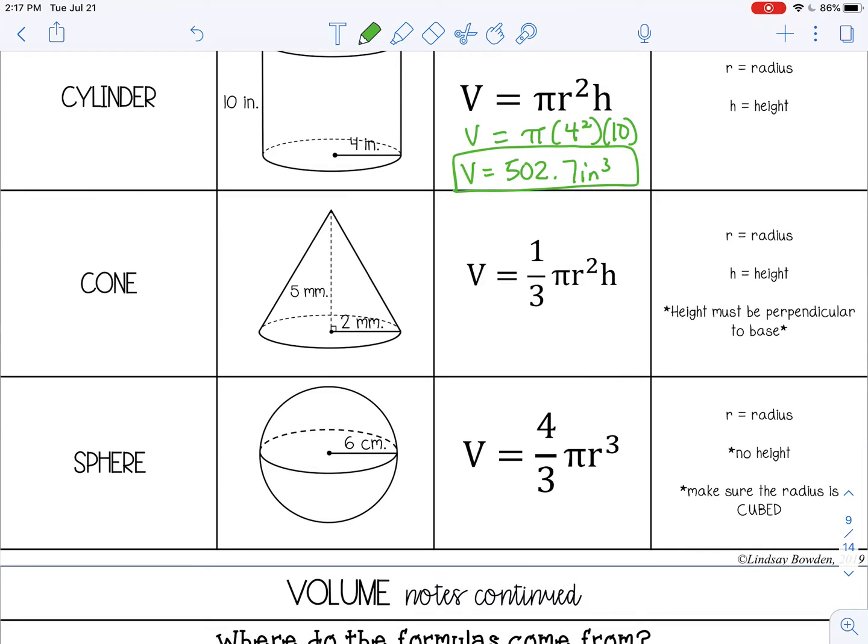For a cone, the volume is 1 third pi r squared h, where r is the radius and h is the height. And remember, height must be perpendicular to the base. So it must be straight up and down. You don't want to use the slant height that's used for surface area.